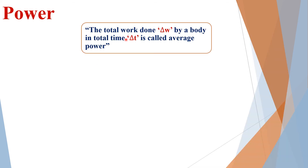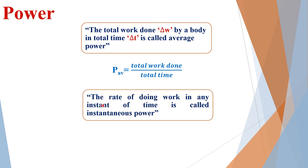Average power is the total work done by a body divided by the total time. To calculate average power, divide total work done by the total time interval. Instantaneous power is the rate of doing work at any instant of time, calculated using the formula: P_instantaneous equals the limit as Δt approaches zero of ΔW divided by Δt.